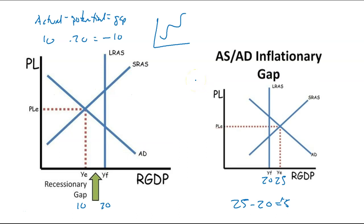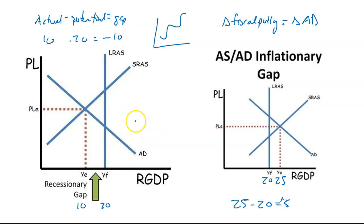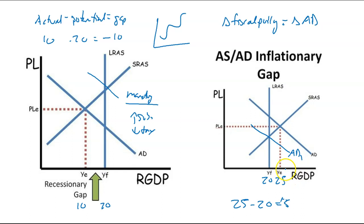Does the economy self-adjust? This is where you can get into changes in fiscal policy, which typically are going to change the aggregate demand. You might say, let's increase subsidies or decrease taxes — that's going to change these things. You could also go into monetary policies, making money more readily available. If AD1 had been my original and then we have an increase in AD, does the economy self-adjust? Yes. The self-adjustment is going to be on the SRAS — long-run adjustments adjust the aggregate supply exclusively.